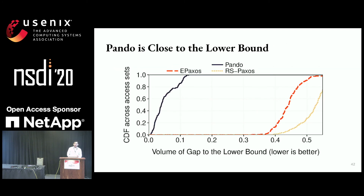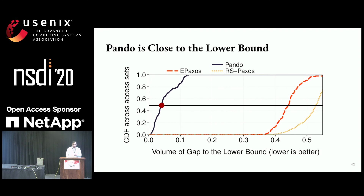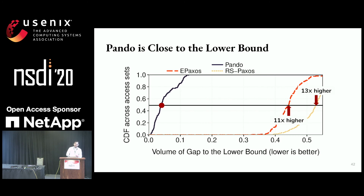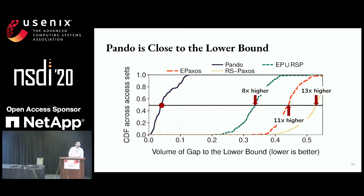We observe that Pando is much closer to the lower bound than either ePaxos or RSPaxos. Looking at the median access set, the gap with RSPaxos is 13 times higher and the gap with ePaxos is 11 times higher than it is with Pando. Even combining ePaxos and RSPaxos by choosing whichever is better, the combination still has a significantly higher gap than Pando.